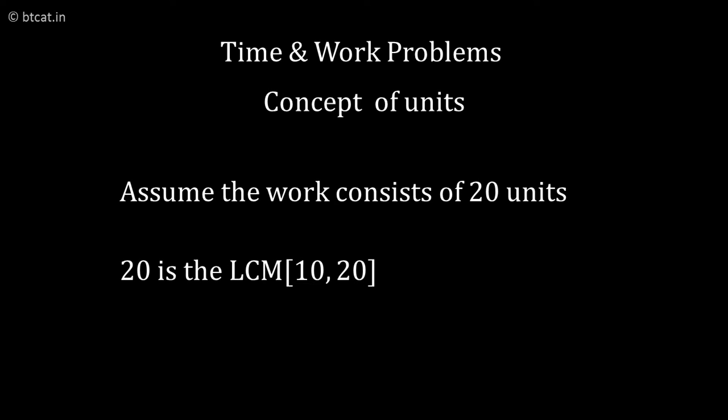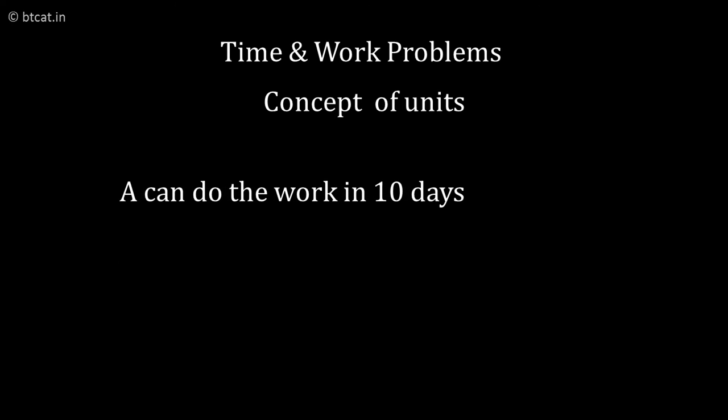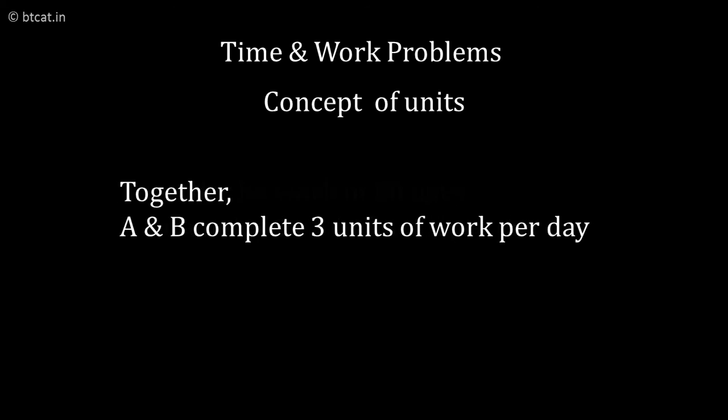So where does this 20 come from? This 20 is nothing but the LCM of their times, 10 and 20. So if the total work is 20 units and A can do it in 10 days, what is the number of units per day? A will do 2 units per day, B will do 1 unit per day.